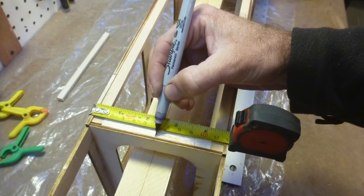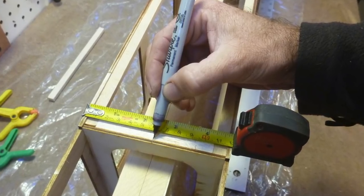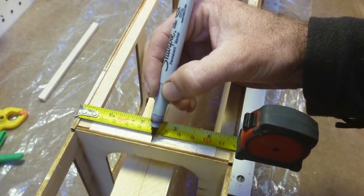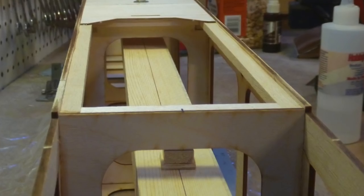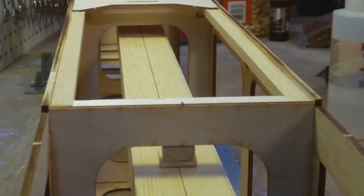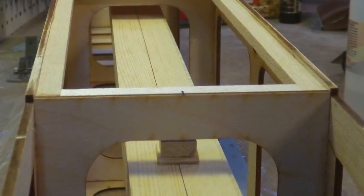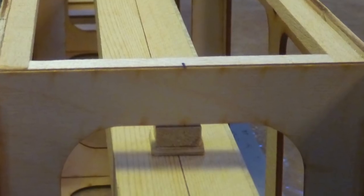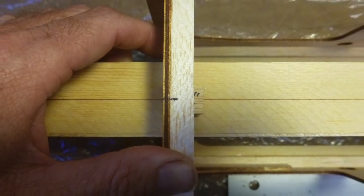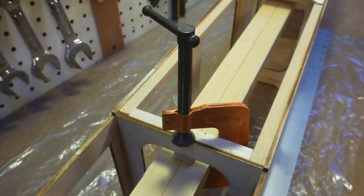We also drew a center mark on the fuselage itself at the aft end of the payload bay, cut a couple of scrap pieces, and glued them together to form a block that is 3 eighths of an inch thick. Inserted this in between the jig and the fuselage bulkhead as a spacer, aligned the marks, and clamped the jig to the fuselage.